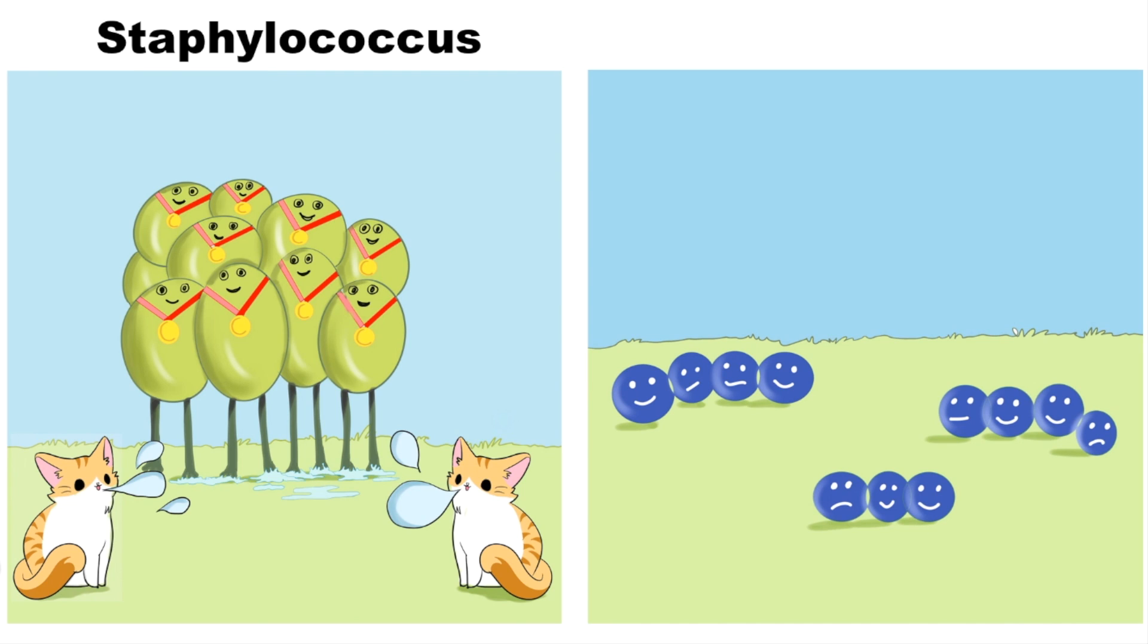Here I have drawn a picture to simplify the properties of staphylococcus. You can see a bunch of grapes standing in a cluster. This will remind you the morphology of staphylococcus. On gram stain, they appear as grape-like clusters. Two cats are standing at the corner of the photograph, which will remind you staphylococcus is catalase positive.